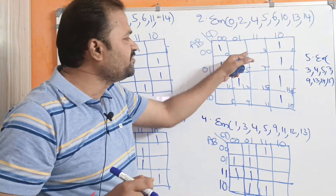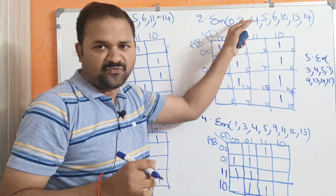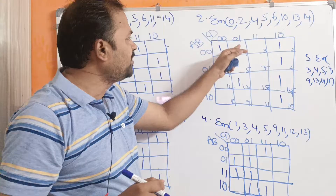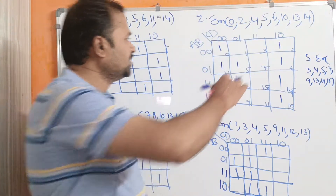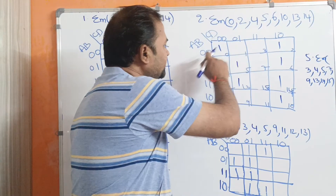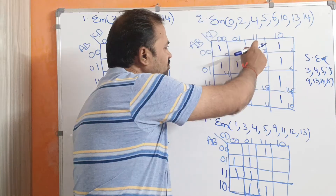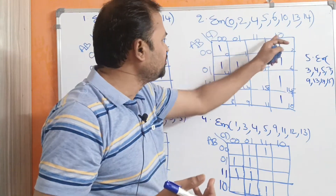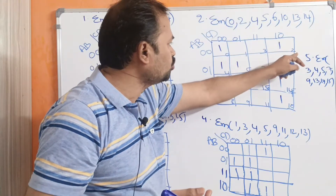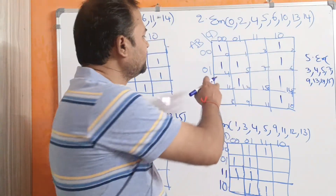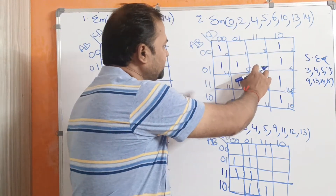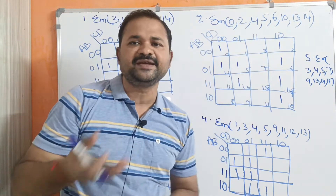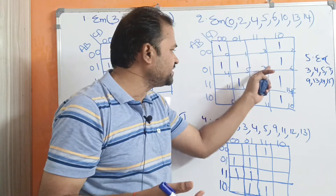In the examination, we may get minterm 1 or its expression A̅B̅C̅D. Likewise, 0,0,1,1 is the third minterm, and 0,0,1,0 means 2, so it is the second minterm. If we observe another cell, it represents 0,1,1,1 which is 7, so this cell represents minterm 7, or we can write it as A̅BCD.